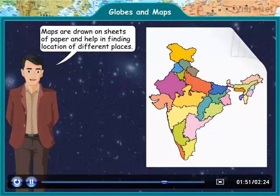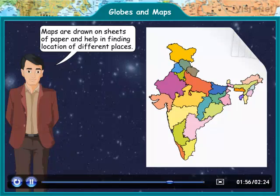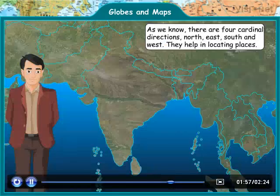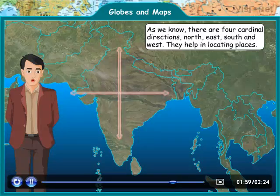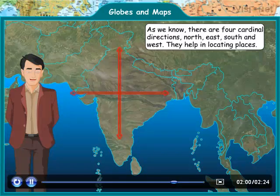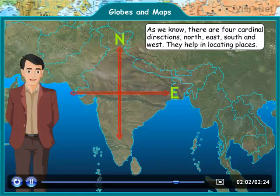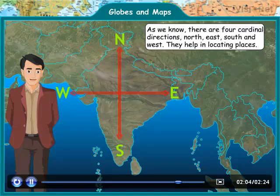Maps are drawn on sheets of paper and help in finding the location of different places. As we know, there are 4 cardinal directions: North, East, South, and West. They help in locating places.